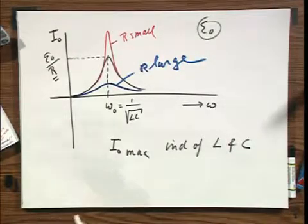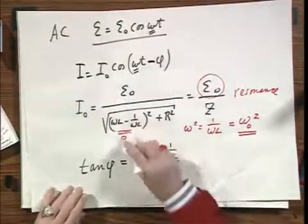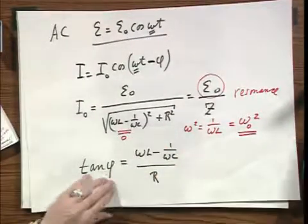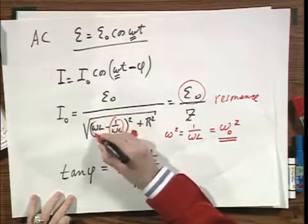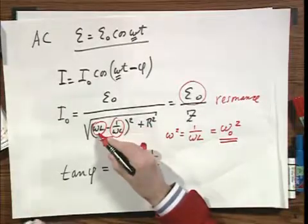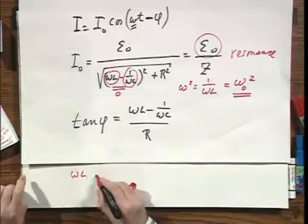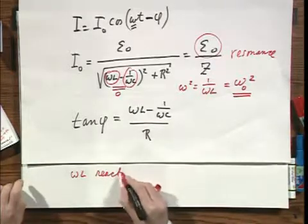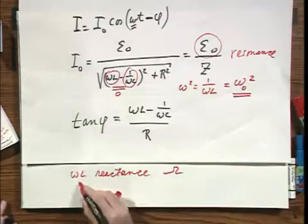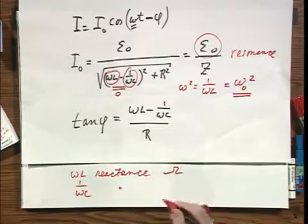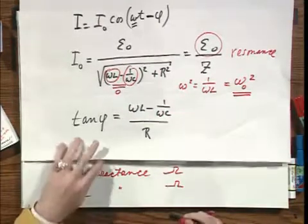If we look at this solution, we give names to these quantities: ωL and 1/ωC. ωL is the reactance of the self-inductor. It has dimensions of ohms. And 1/ωC is the reactance of the capacitor, which also has units in terms of ohms.